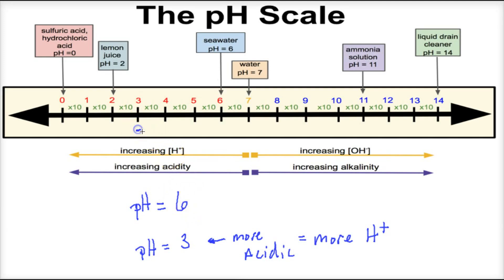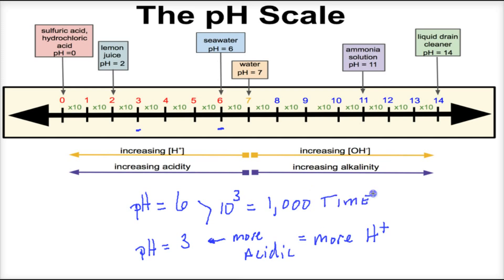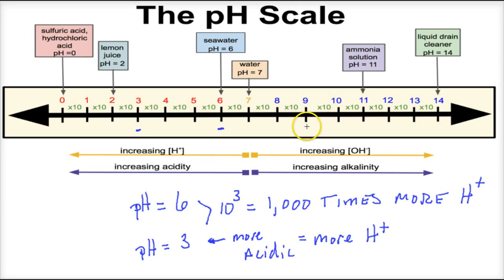But how much stronger is an acid with a pH of three compared to a pH of six? Every step on the pH scale is basically a power of 10. Comparing a pH of three to a pH of six, it's three steps away — one, two, three — so 10 × 10 × 10, or 10 to the third, and we end up with 1,000 times more acidic, meaning 1,000 times more H+ ions floating around in that solution. Similarly, a solution with a pH of 11 has 100 times more hydroxide ions than a solution with a pH of nine.